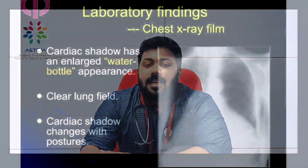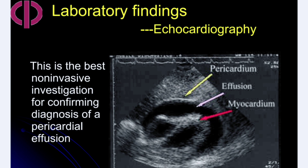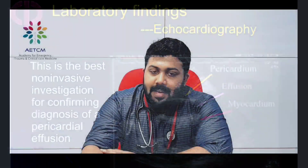On chest X-ray, the cardiac shadow is enlarged and classically described as a water bottle appearance. The lung fields appear clear, and the cardiac silhouette changes with posture. Echocardiography is the best non-invasive investigation for confirming pericardial effusion. The subcostal view is the best view for detecting pericardial effusion; a large rim of pericardial fluid with minimal cardiac contraction suggests tamponade.